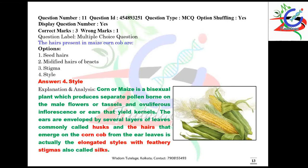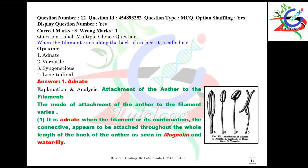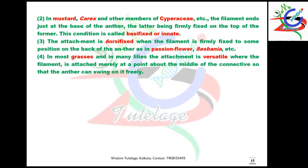Question number twelve: when the filament runs along the back of the anther, it is called adnate type of anther. Different types of anthers and their attachment modes are given here along with examples.